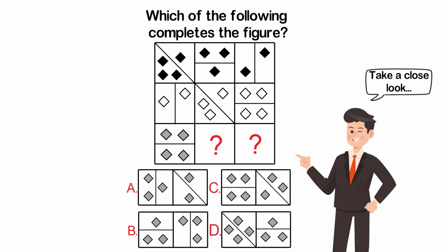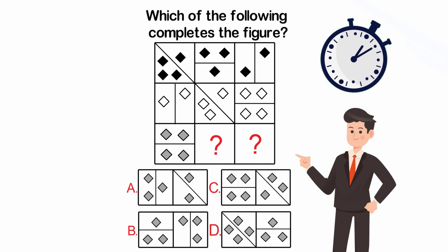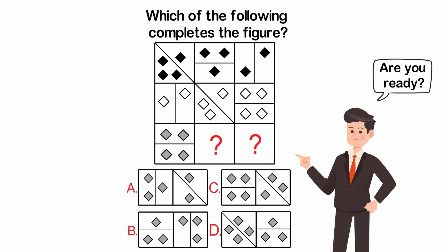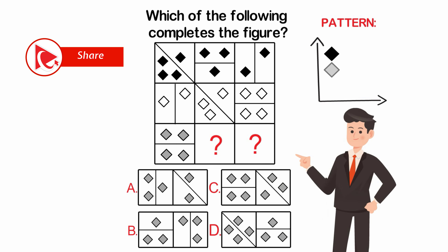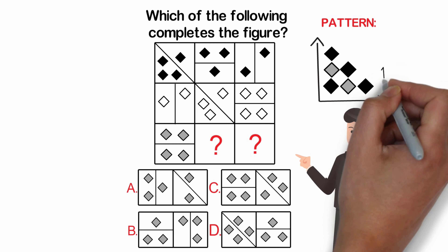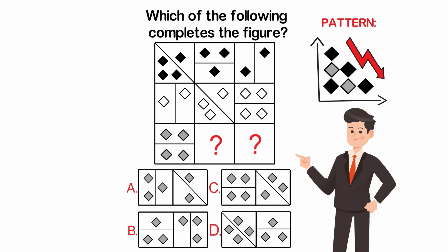The solution is not obvious but it is very simple. Give yourself 10 to 30 seconds — pause the video if you like — to see if you can come up with the answer on your own. As mentioned, the answer is very simple: the pattern is represented in each row by a decreasing number of diamonds.